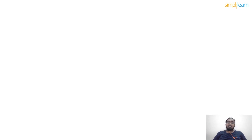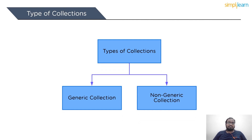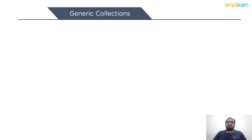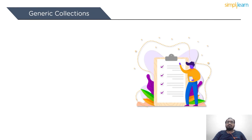Next, let's go over the types of collections. There are majorly two types of collections defined: the generic collection and the non-generic collection. A generic collection is a class that provides type safety without requiring derivation from a basic collection type, and the implementation of type-specific members. The collection classes are found in the namespace system.collections.generics. Internally, generic collections store elements in arrays of their respective types.